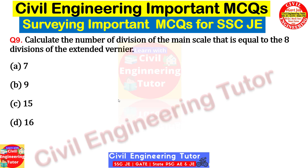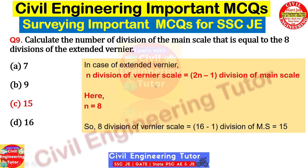Question nine: calculate the number of divisions of the main scale equal to eight divisions of the extended vernier. For the extended vernier, the formula is: n divisions of the vernier scale equals (2n − 1) divisions of the main scale. Here, n = 8. So 8 divisions of the vernier scale corresponds to 2 × 8 − 1 = 16 − 1 = 15 divisions of the main scale. Just remember this formula.